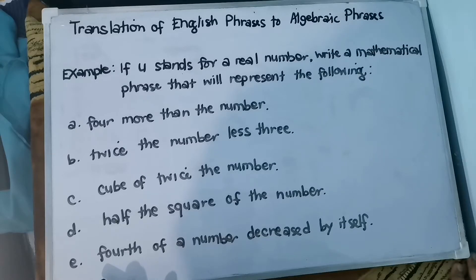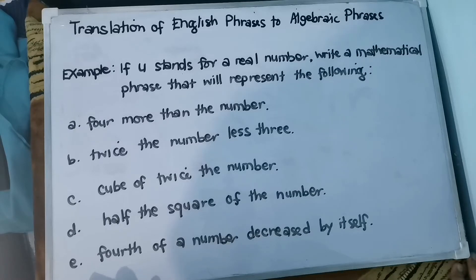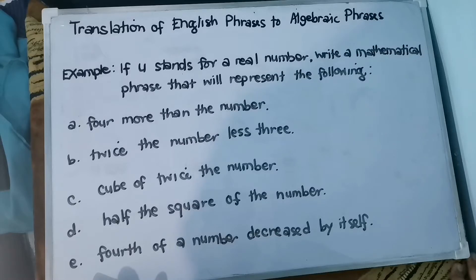In addition, we have keywords like increase, added to, and sum. For subtraction: less than, less, decrease, etc. In multiplication, you have times and product. And for division, we have ratio of and quotient.